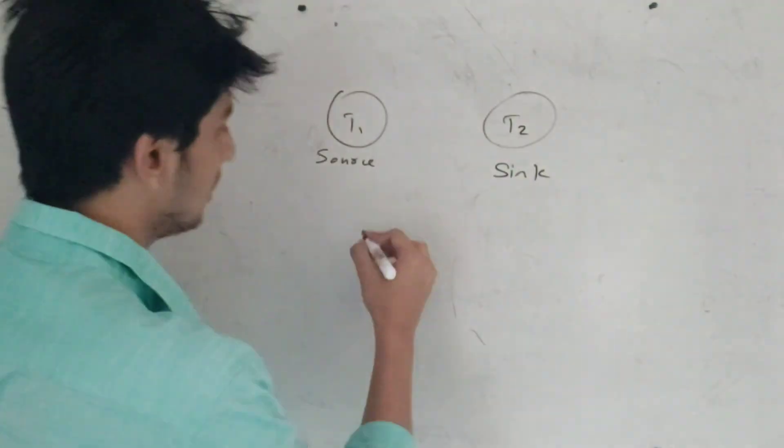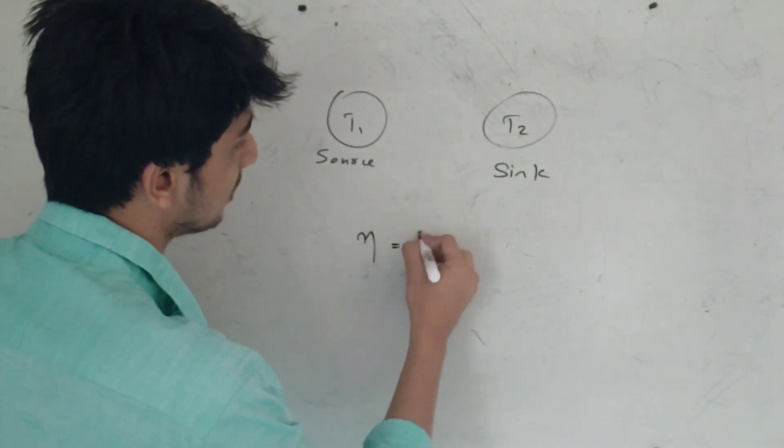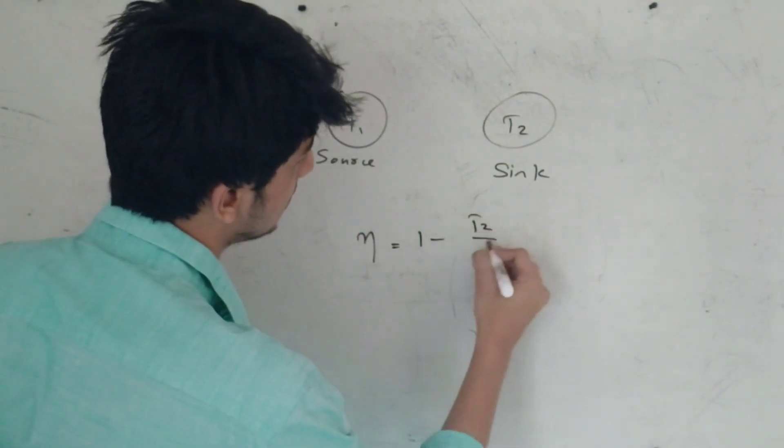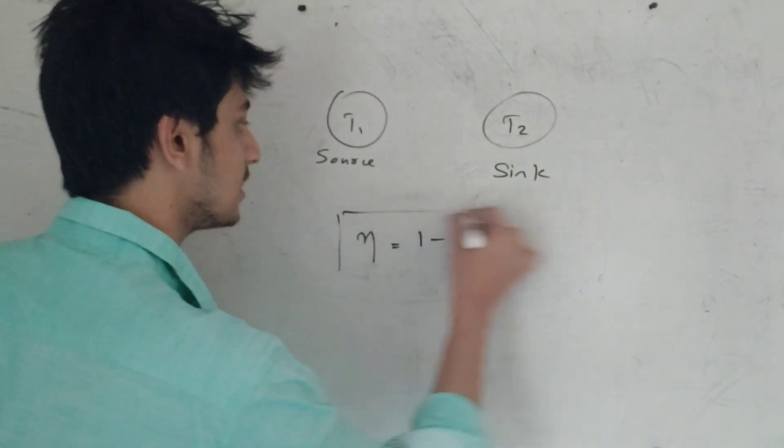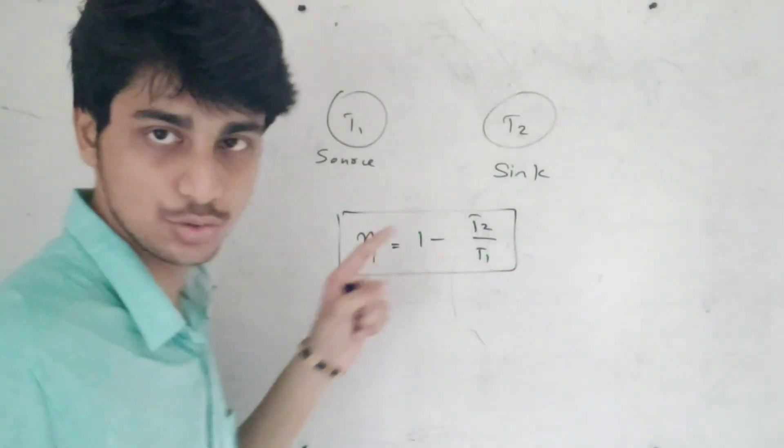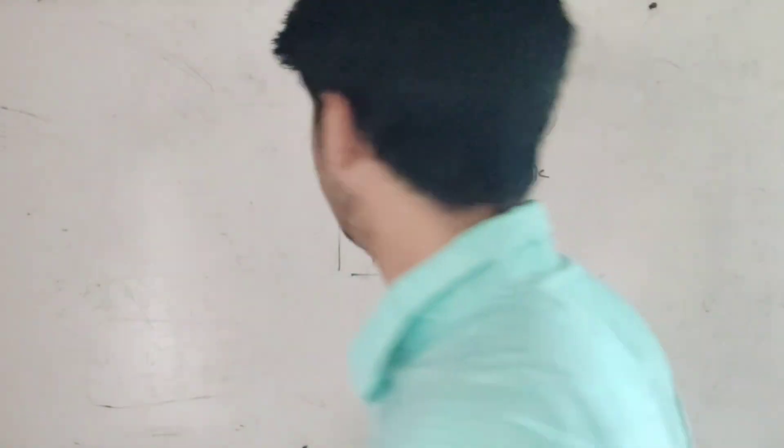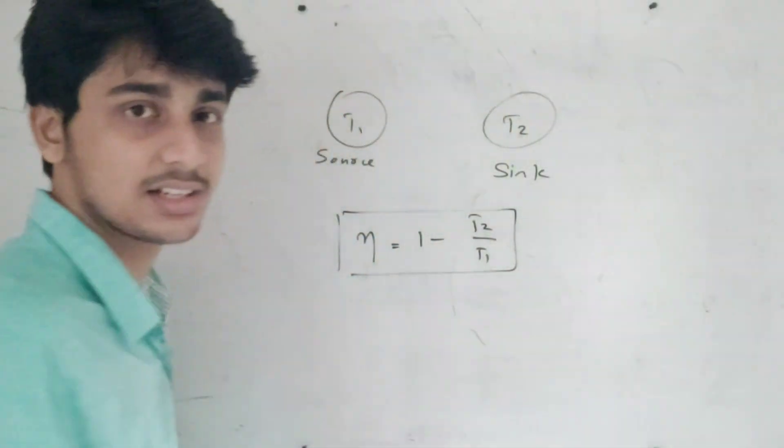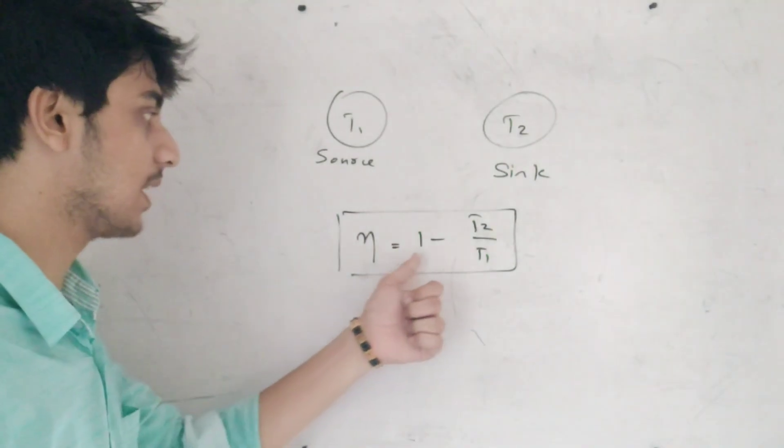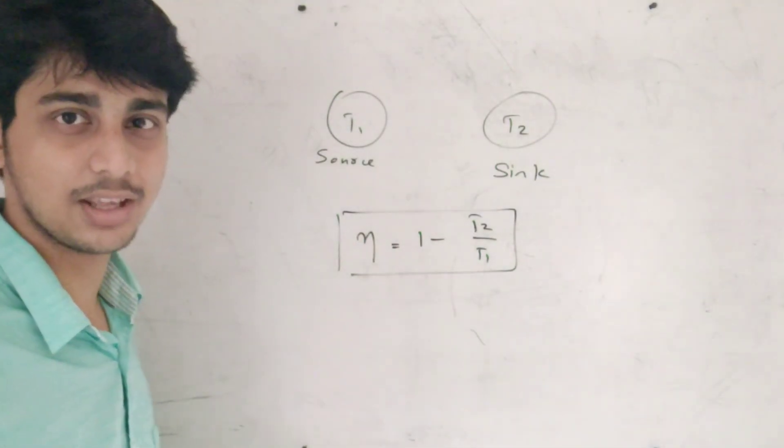One equation is efficiency η equals 1 minus T2 by T1. Efficiency η is 1 minus T2 by T1.